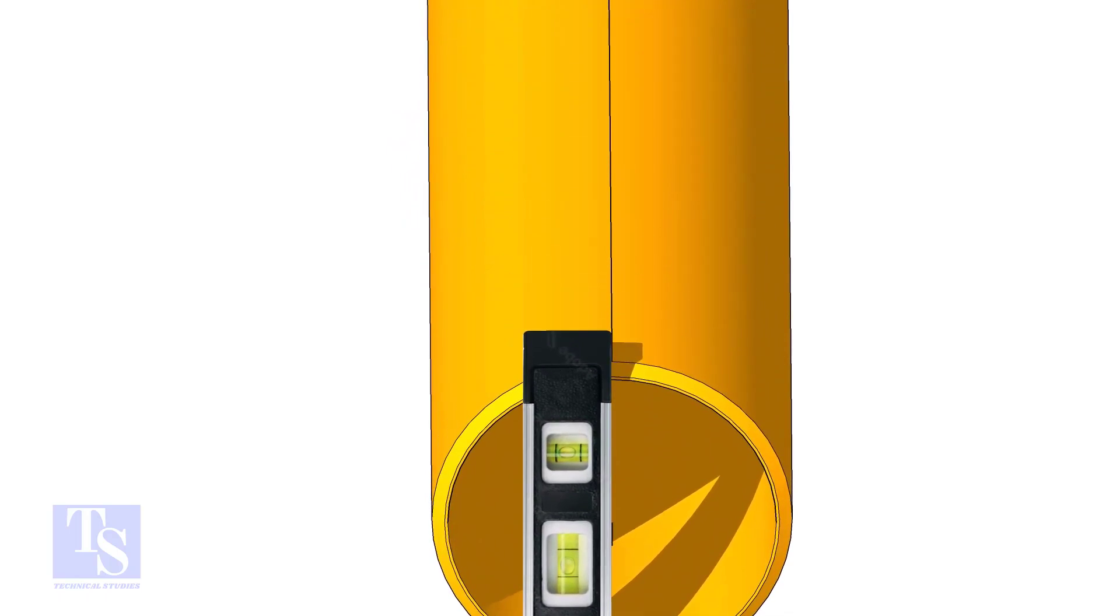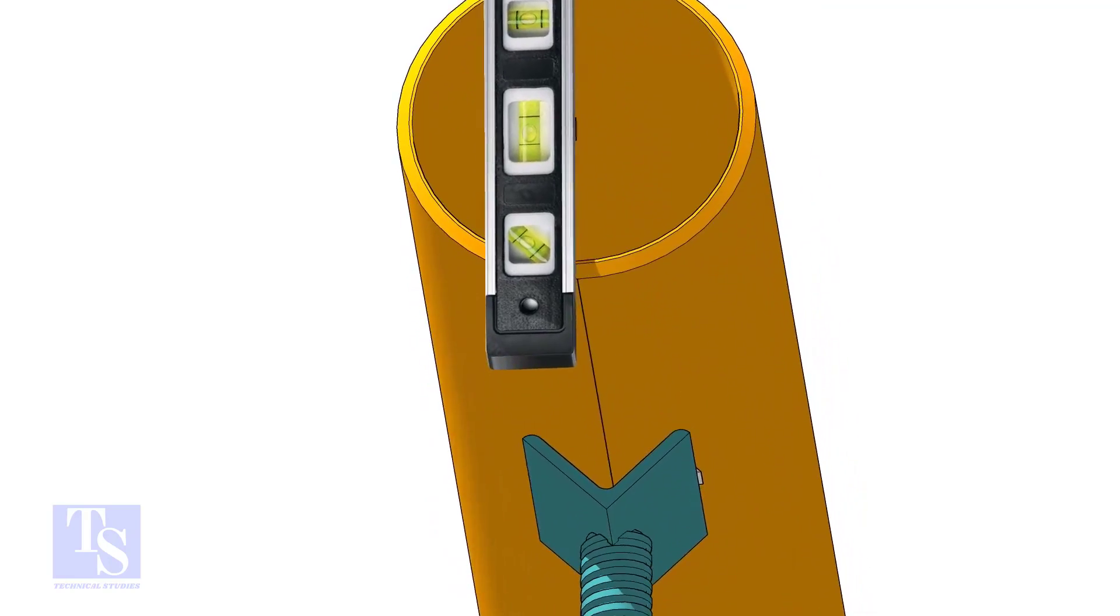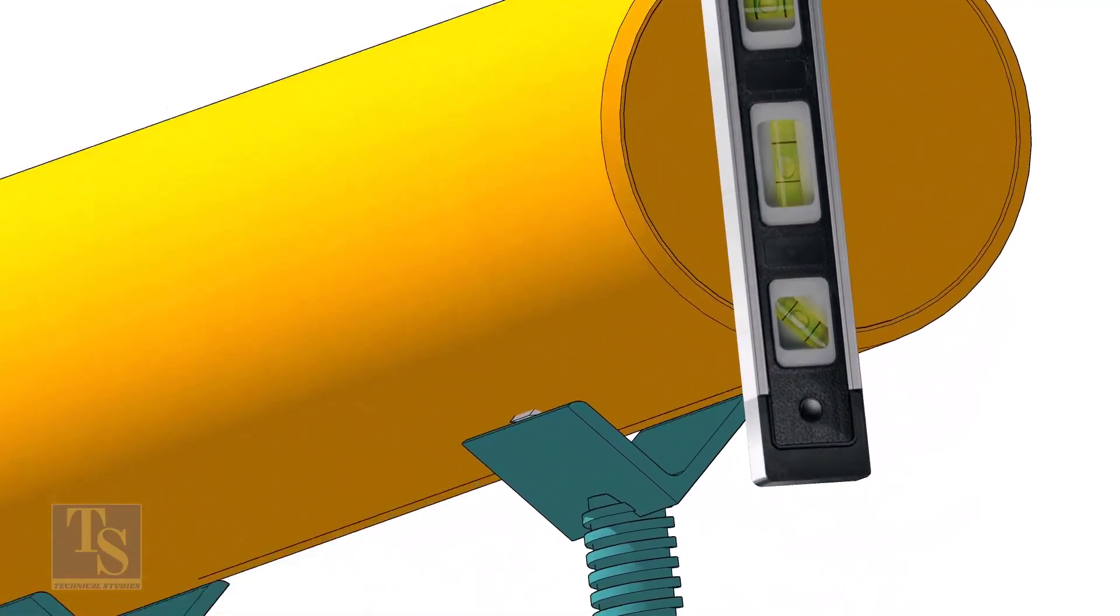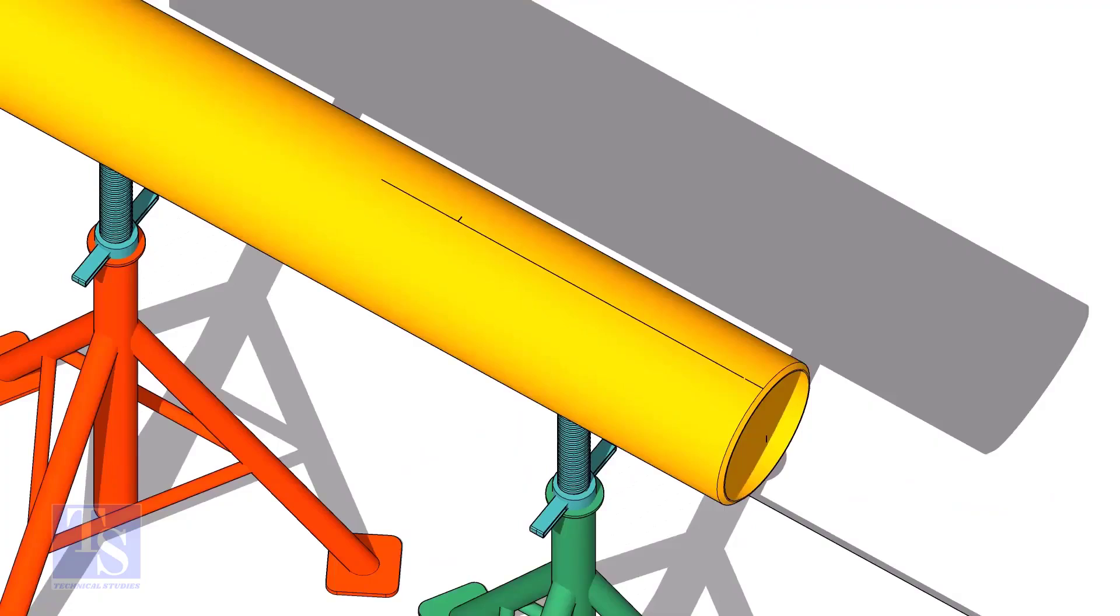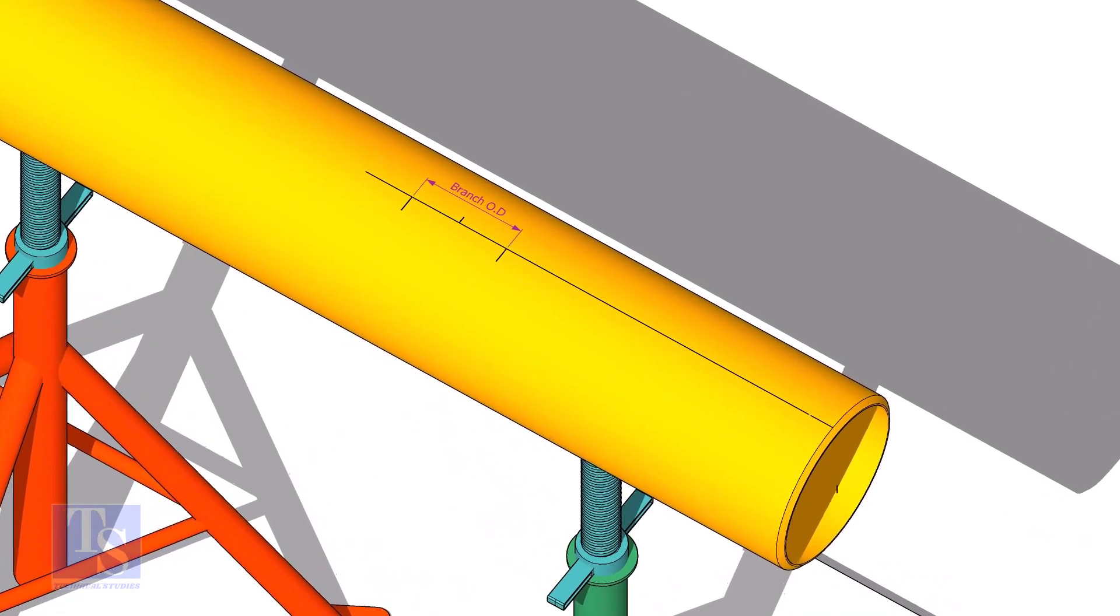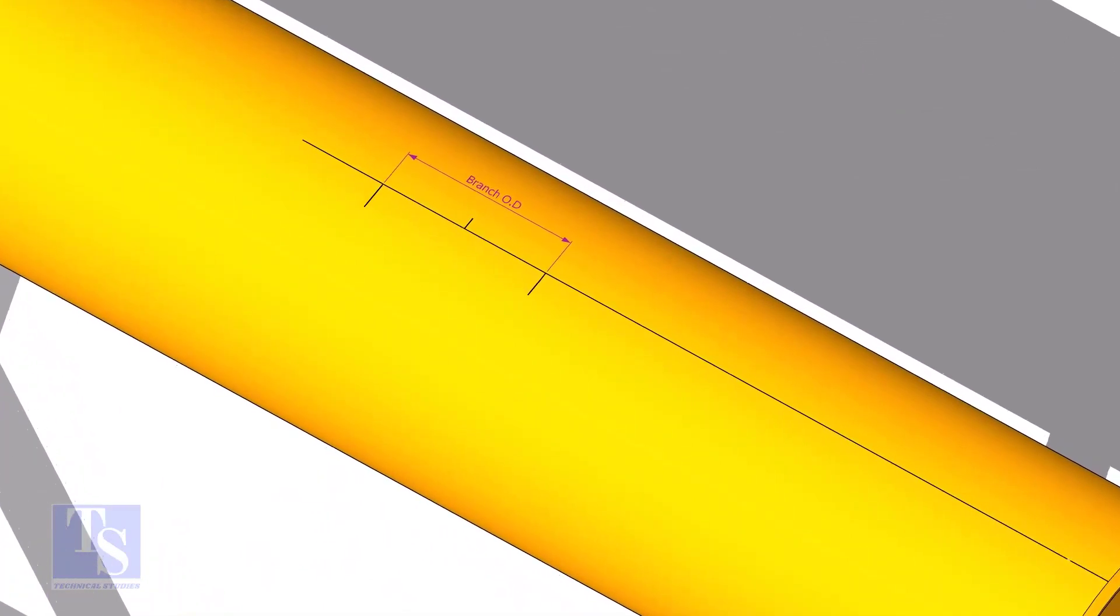Level the pipe horizontally and vertically as shown. After leveling, arrest the pipe to stop it from rotating. Mark the branch OD on the centerline of the header.